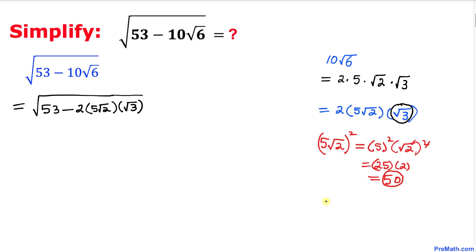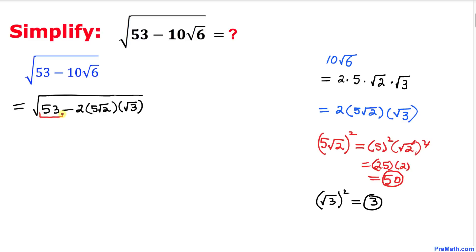Likewise, let's focus on this part: square root of 3. If I square this, the square and square root undo each other, so we simply get 3.